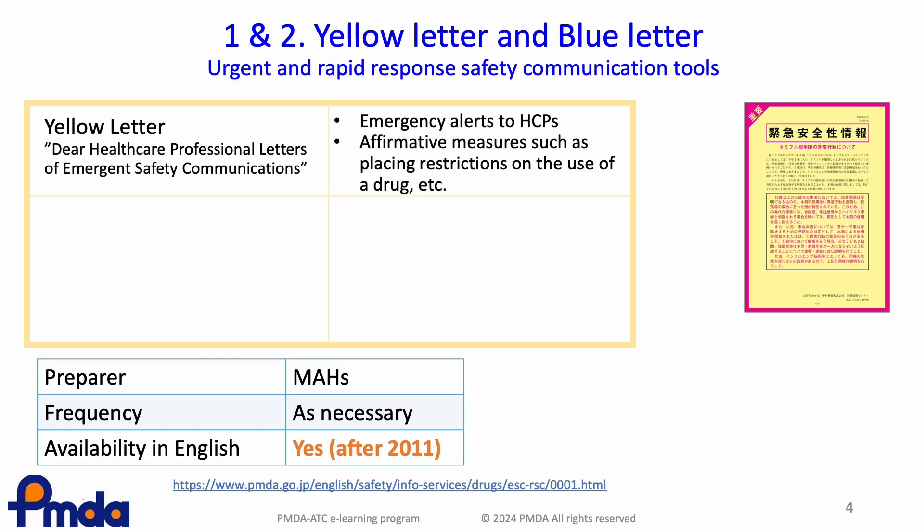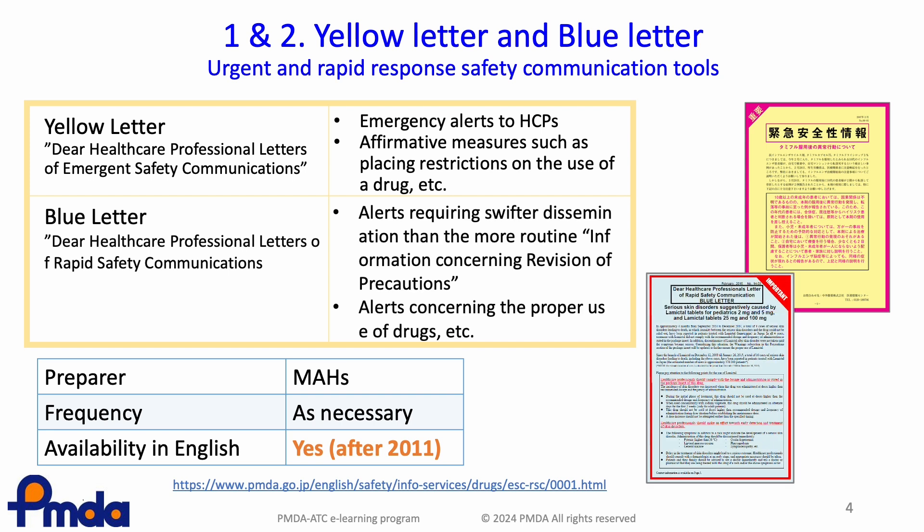The yellow letter is an emergency alert to HCPs and contains affirmative measures such as restrictions on the use of a drug. The blue letter is an alert requiring swifter dissemination — for example, alerts concerning the proper use of drugs. The yellow and blue letters were made available in English after 2011.